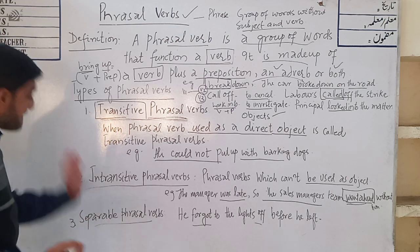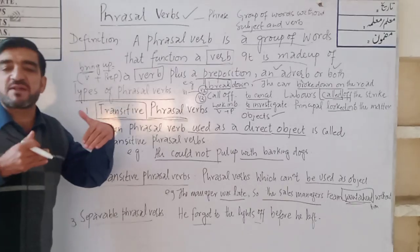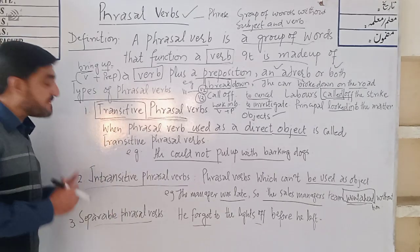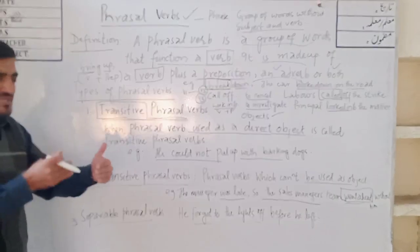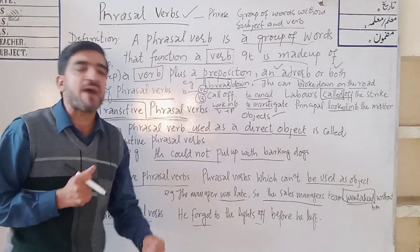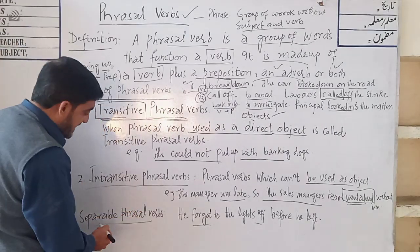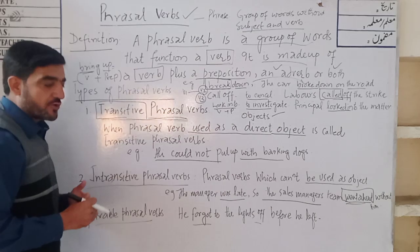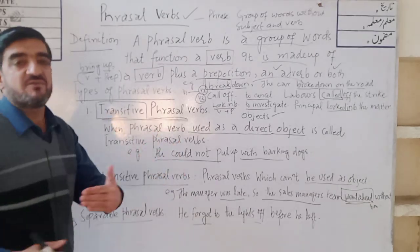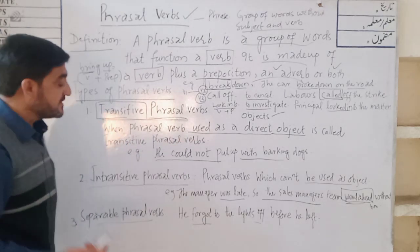And then there is the separable phrasal verb. 'Separable' is derived from separation. So it is the type of phrasal verb which can be divided into parts. Separable phrasal verbs are those in which the phrasal verb is divided into two or more than two parts.